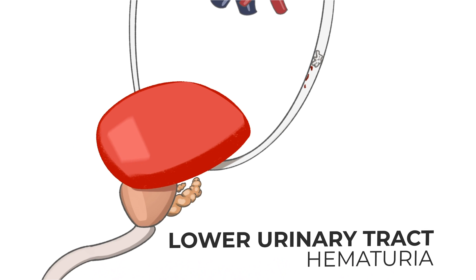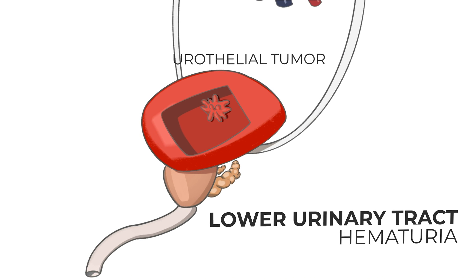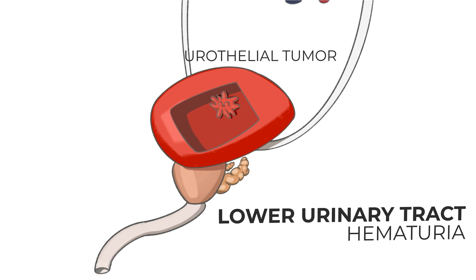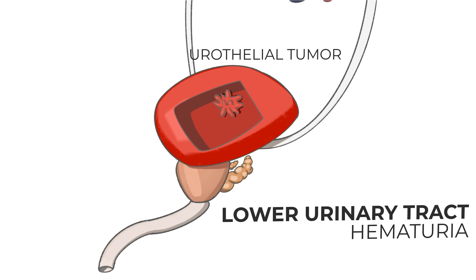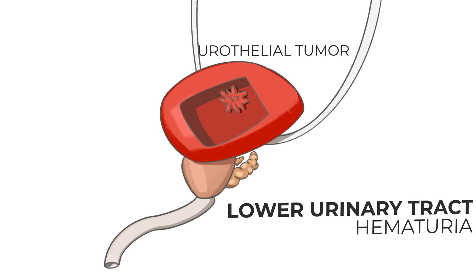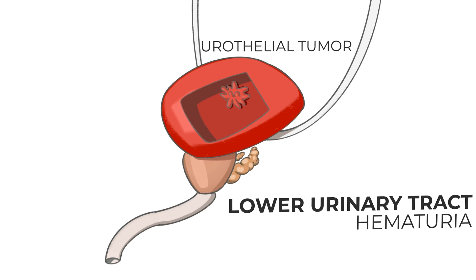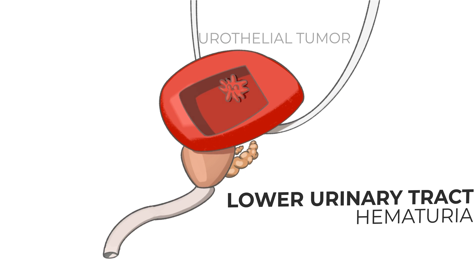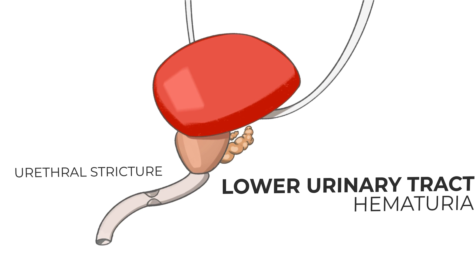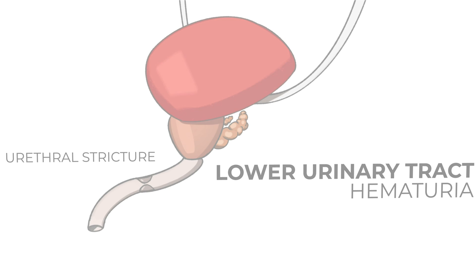Moving down to the lower urinary tract, we see urothelial tumors such as bladder cancer — cancer of the lining of the urothelium. Just like kidney cancer, they can have abnormal, fragile blood vessels that bleed quite easily. Urothelial cancer can happen in the bladder, the ureters, or the urothelial lining of the kidney, but the bladder is the most common. Less commonly, a urothelial tumor can show up in the urethra, but it is an important cause to rule out during a workup. Lastly, a urethral stricture is a lower urinary source — as urine passes through the stricture, the velocity increases, which can cause inflammation and bleeding to the lining of the urothelium.